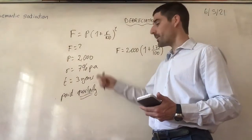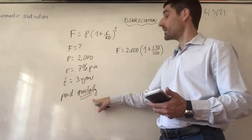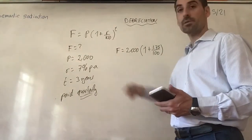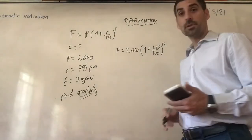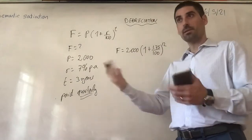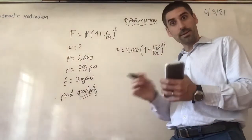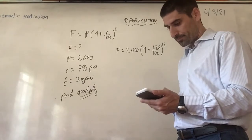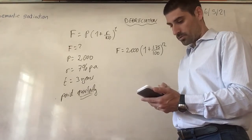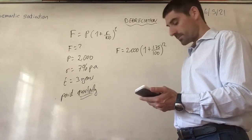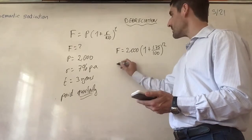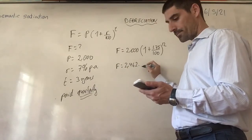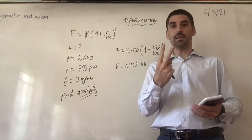And because interest is paid quarterly and it's three years, the time period's frequency has to match the interest frequency. So instead of three years, it's going to be twelve quarters — four quarters in one year, three years equals twelve quarters. So that's my formula. Using one point seven five divided by a hundred, plus one, to the power twelve, times two thousand, the future value is two thousand four hundred and sixty two point eight eight — again to two decimal places because we are dealing with money.